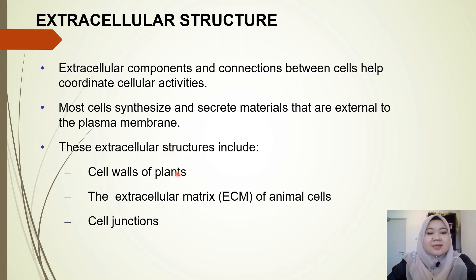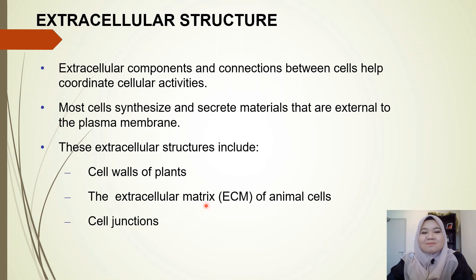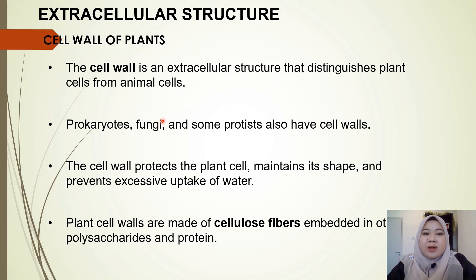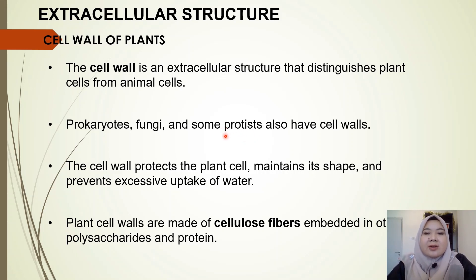We have a few extracellular structures to discuss: the cell wall of plants, the extracellular matrix or ECM in animal cells, and cell junctions. The cell wall is an extracellular structure that distinguishes plant cells from animal cells. Not only plants have a cell wall — prokaryotes, fungi, and some protists do as well, though they differ in the type of materials found in the cell wall.